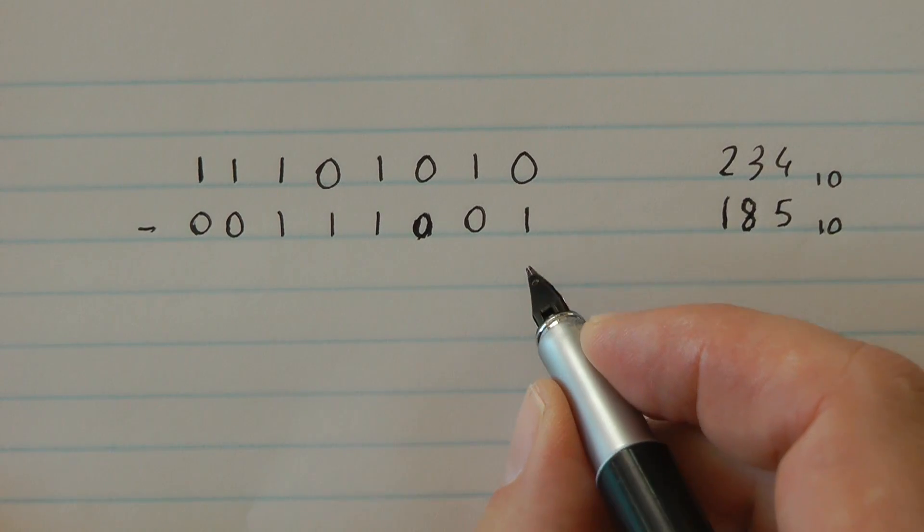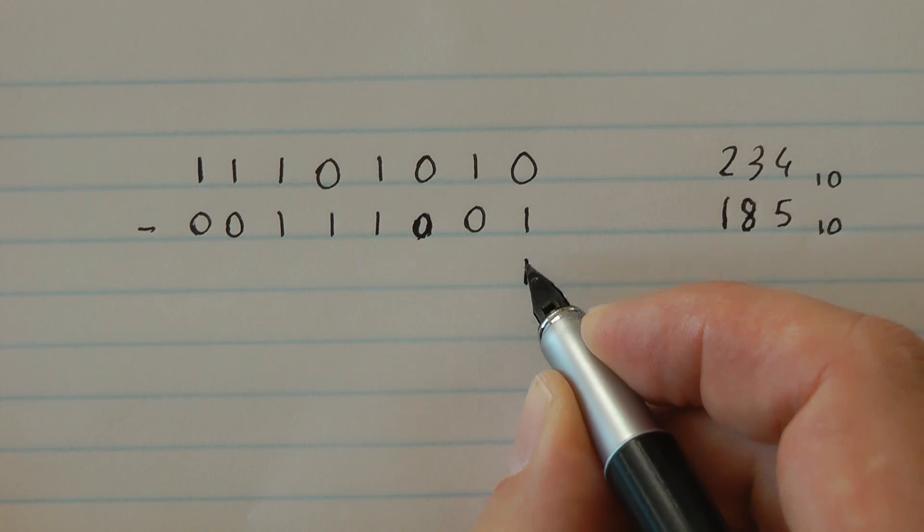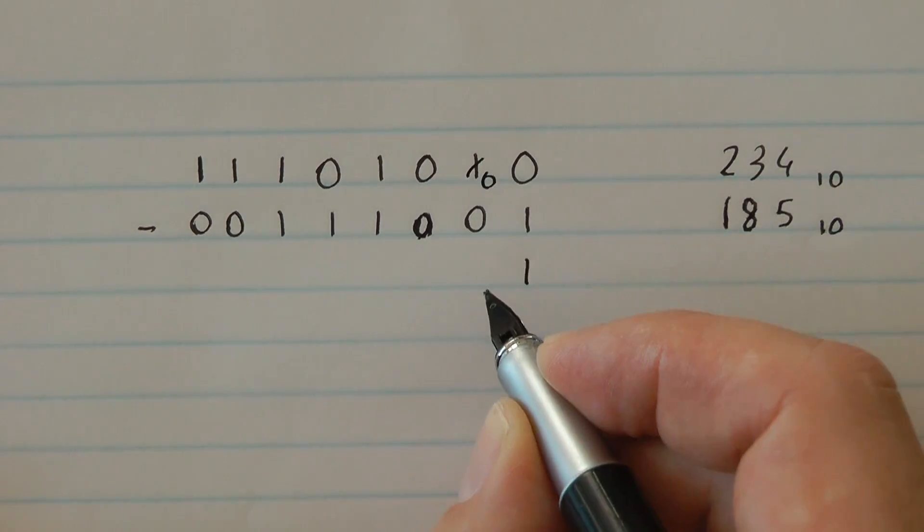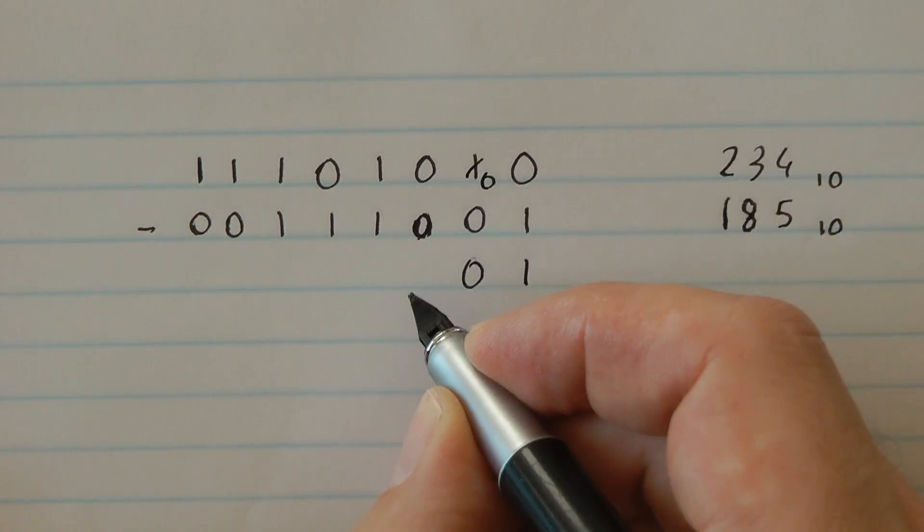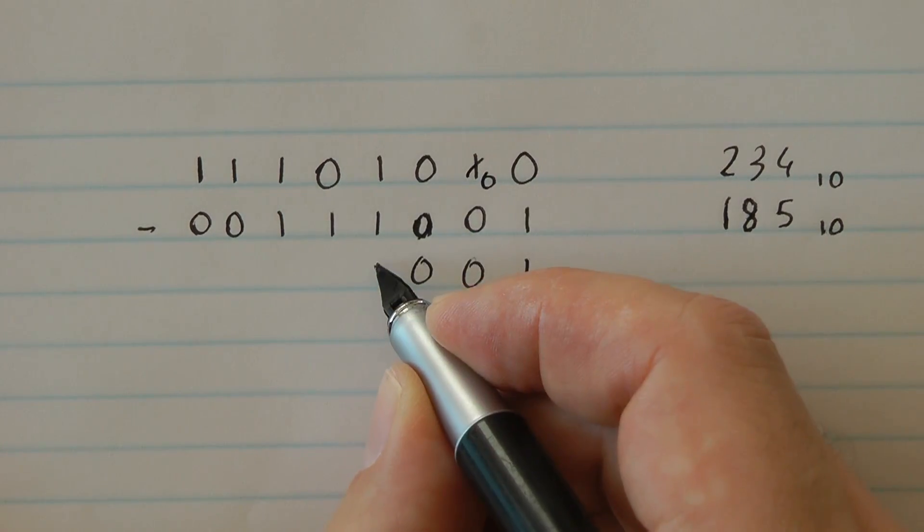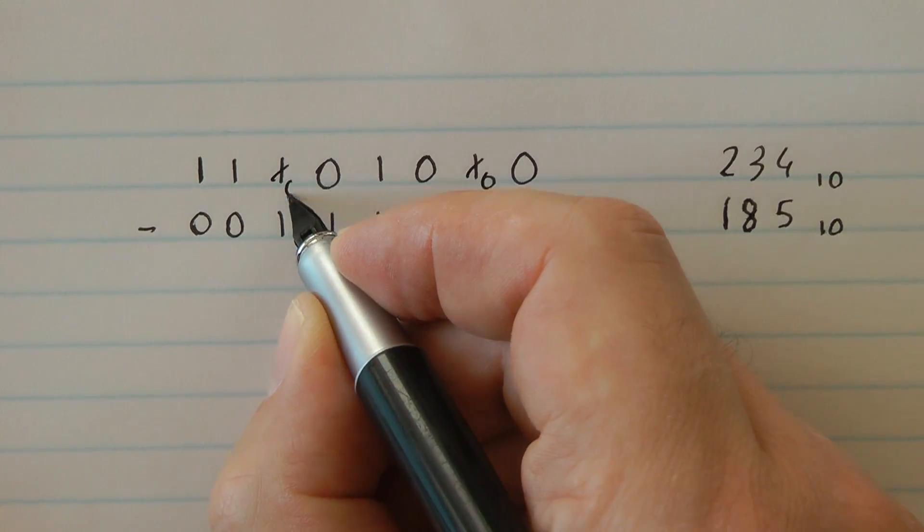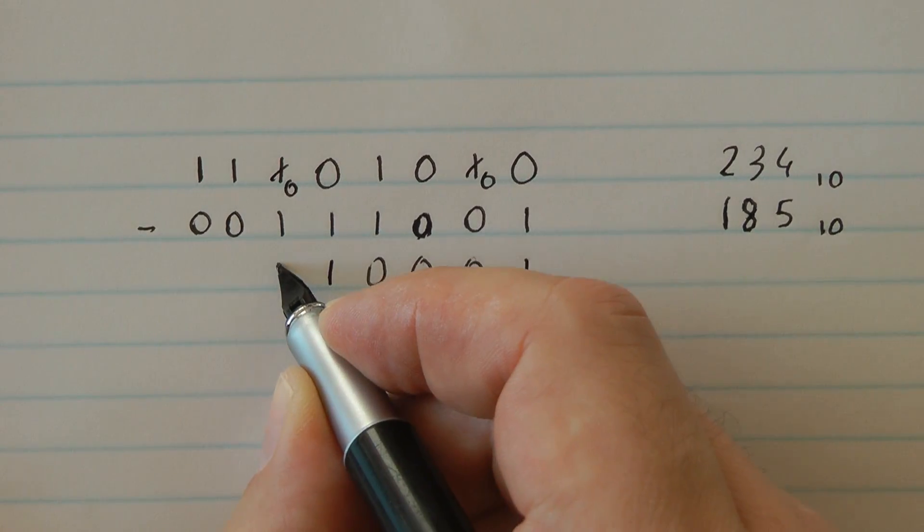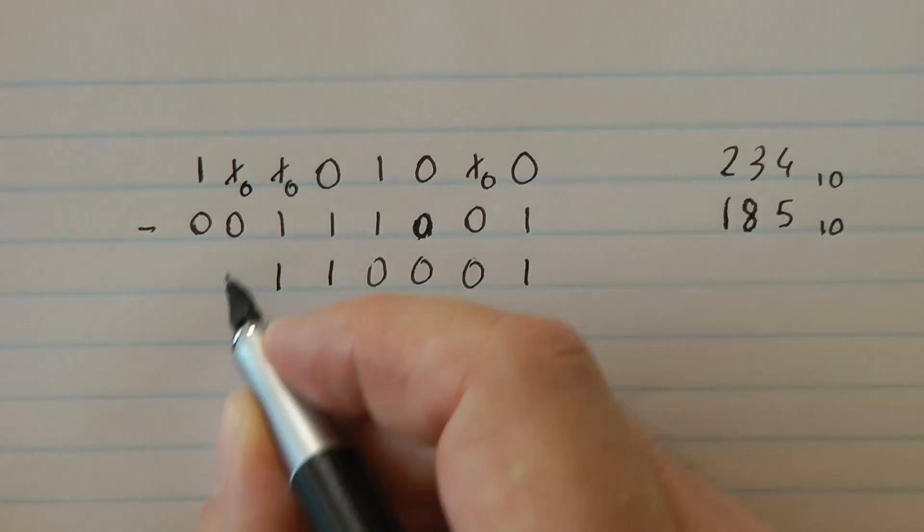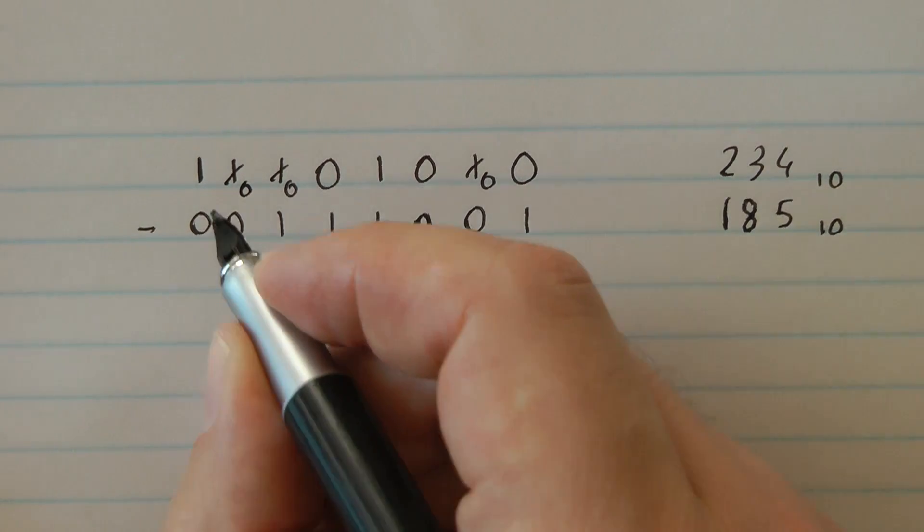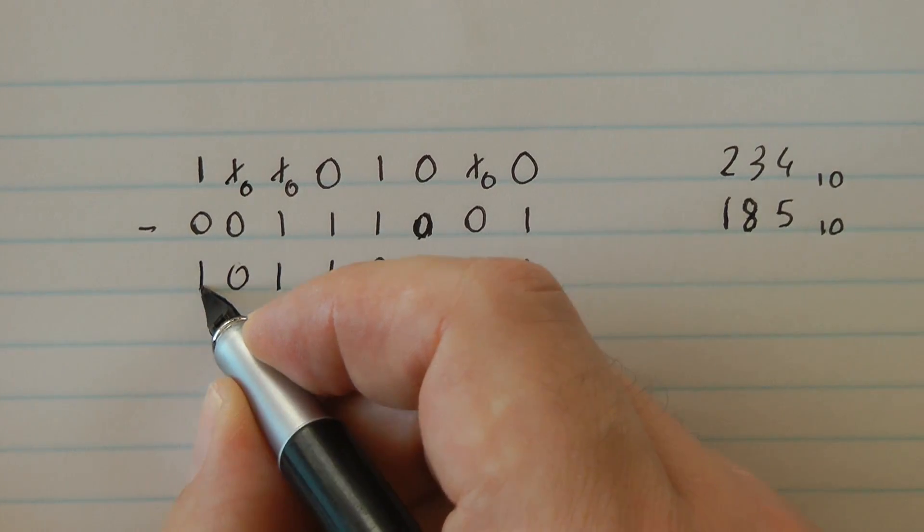0 minus 1 is 1 and a borrow. 0 minus 0, 0 minus 0, 1 minus 1, 0 minus 1, 1 and a borrow. 0 minus 0, 1 minus 0, 1 minus 0, here we are.